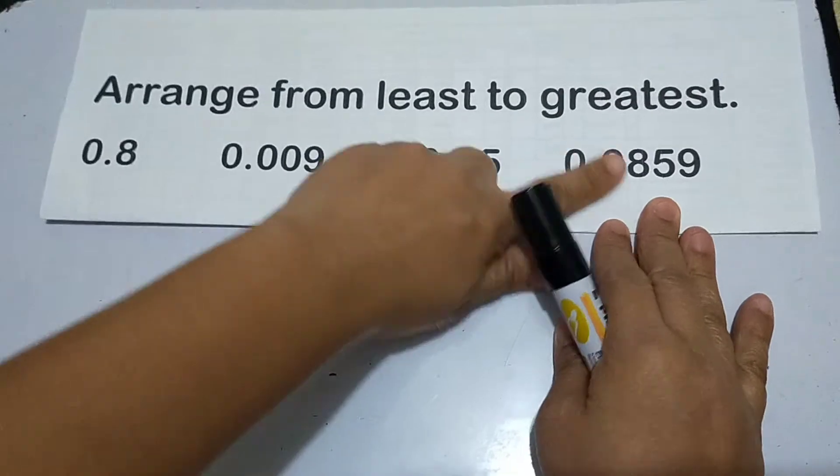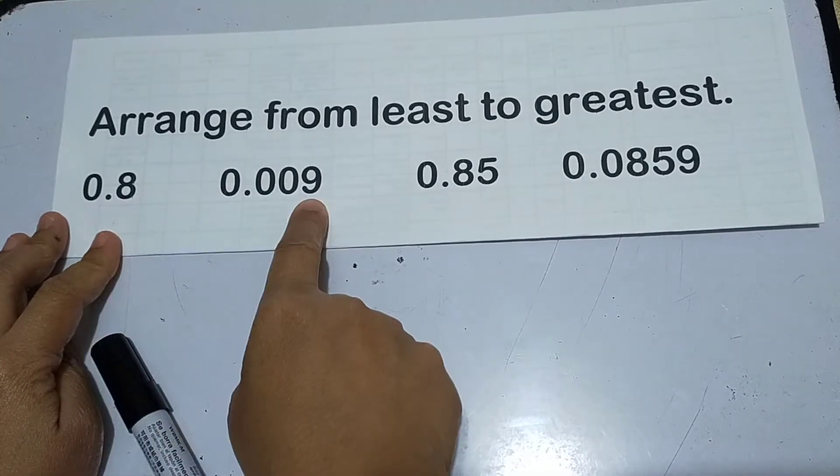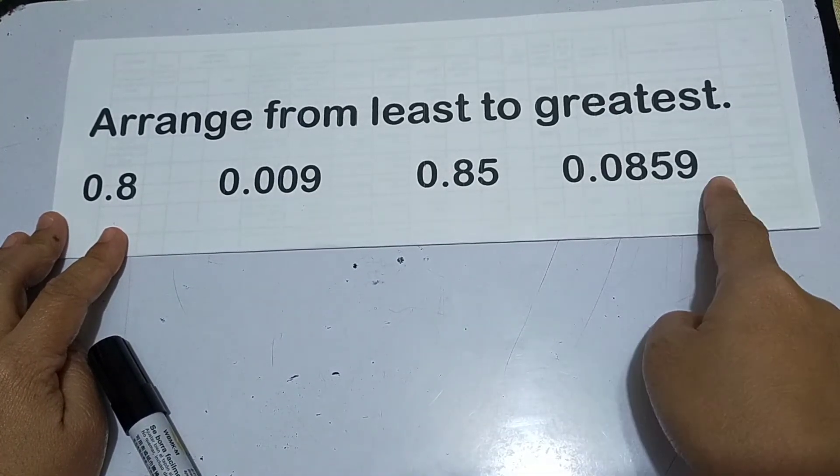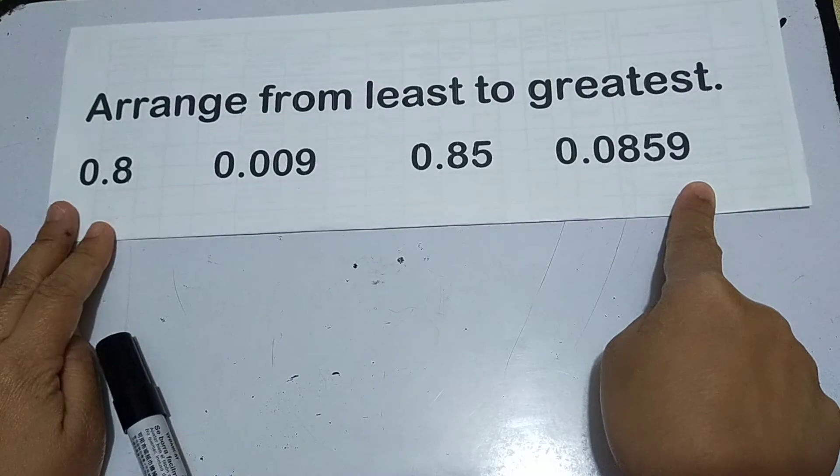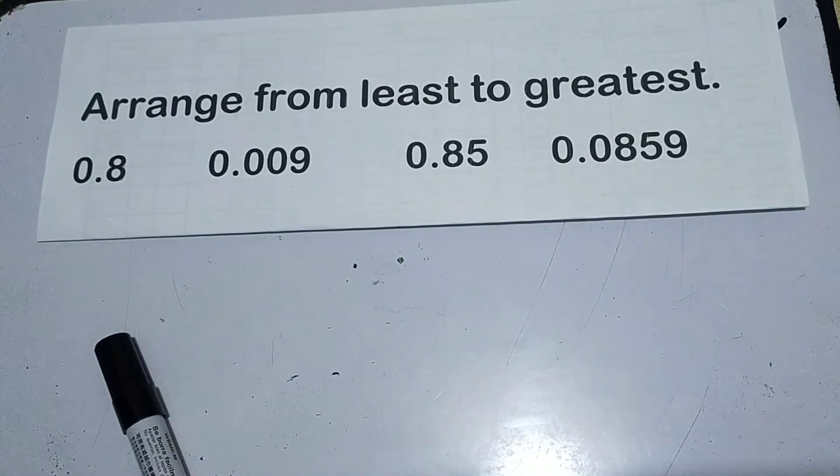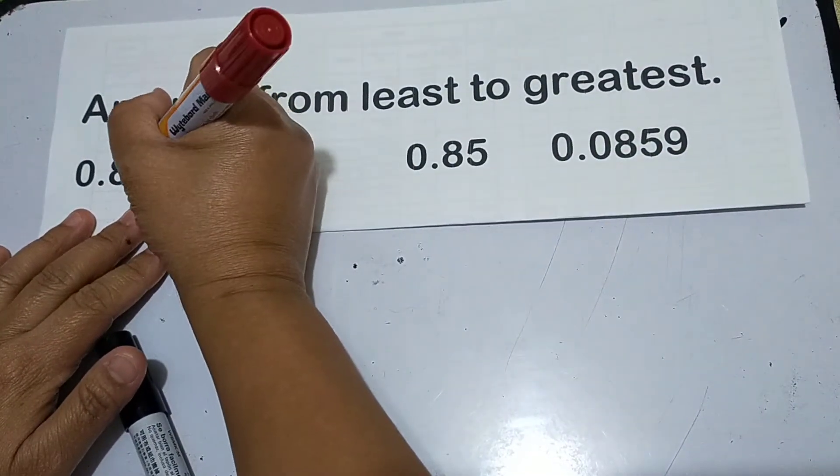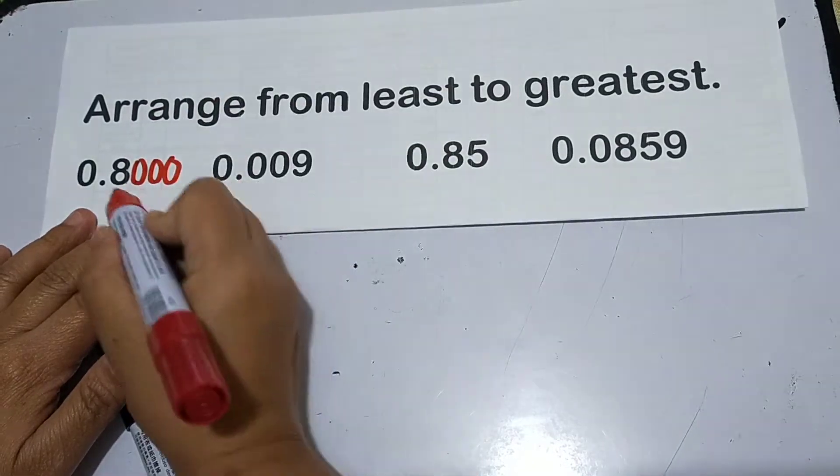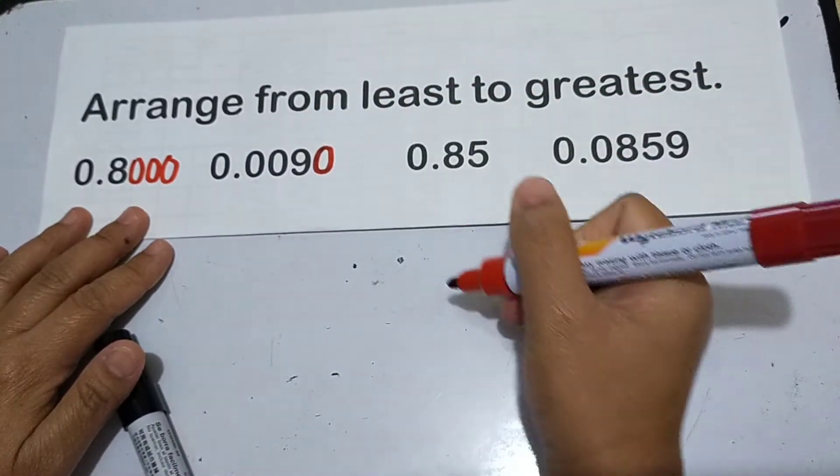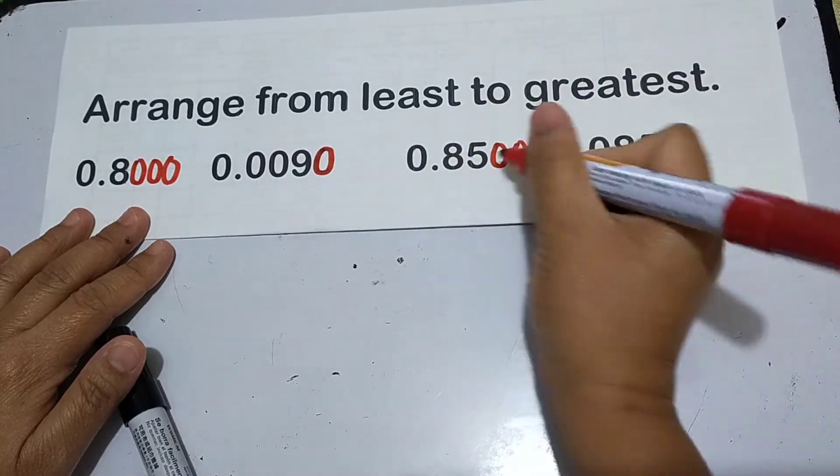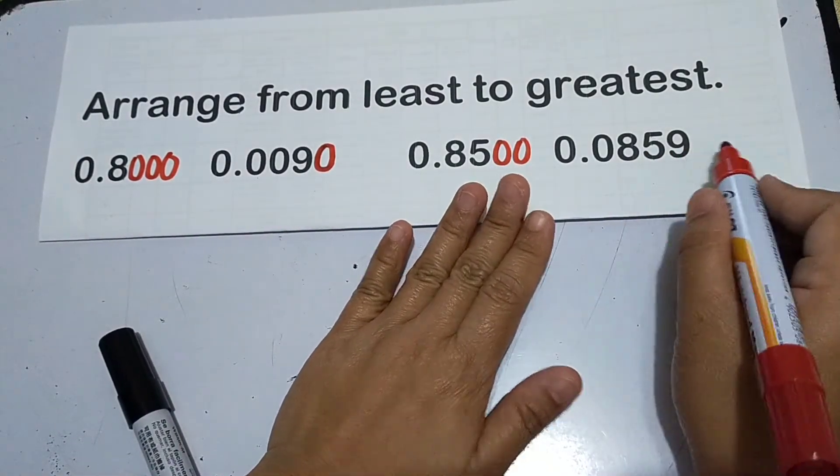So let's say ito, arrange from least to greatest. Ang technique dyan, para maiayos nyo siya - tingin nyo, ito 8 tenths, ito 9 thousandths, ito 85 hundredths, ito naman 859 ten thousandths. Magkakaiba bilang ng digits. Just like what we did before sa comparing, ganun din yung gagawin natin sa arranging. Maglalagay lang din tayo ng imaginary zeros. Ang pinakamaraming digits dito ay apat. So gawin natin din apat ito. Yung 8 tenths magiging 8 thousand ten thousandths. Ito naman, magiging 90 ten thousandths. Ito naman, magiging 8 thousand 500 ten thousandths. And then, ito, 859 ten thousandths.